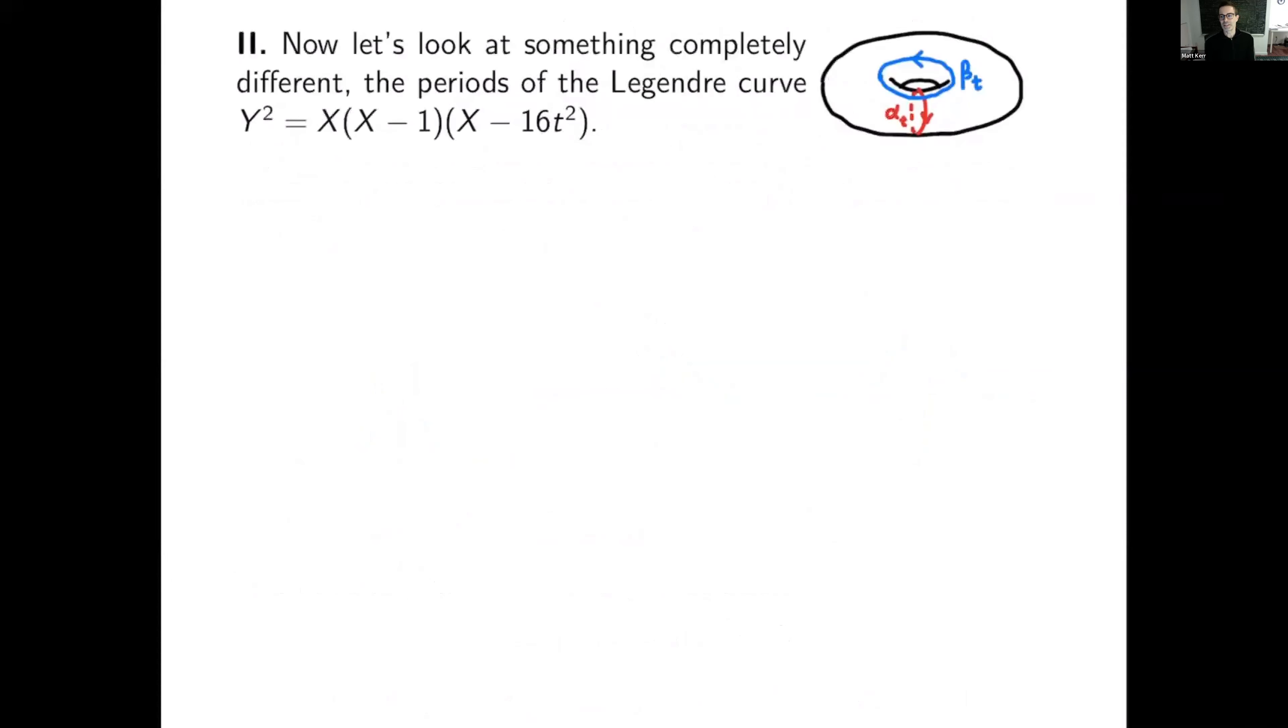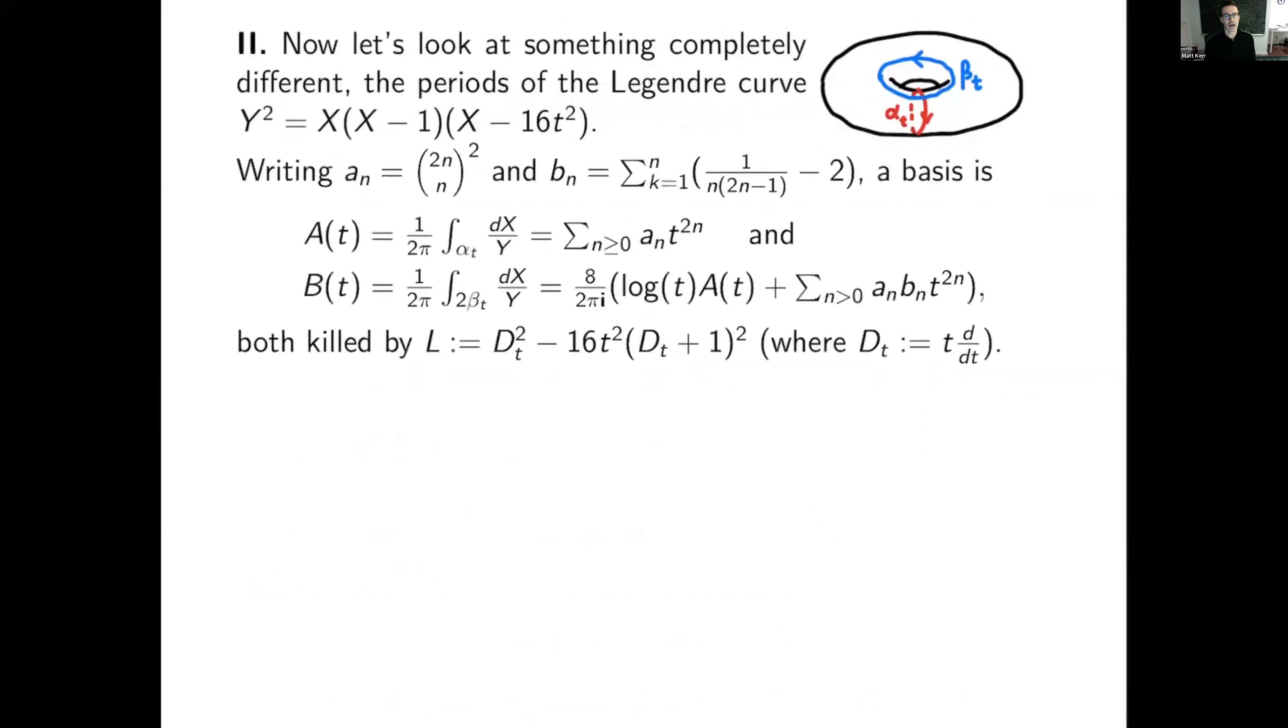So here's something apparently completely different. We look at the Legendre curve, pulled back by t goes to 16t squared. So it's a family now over P1 minus four points, and we have cycles alpha t and beta t on it.